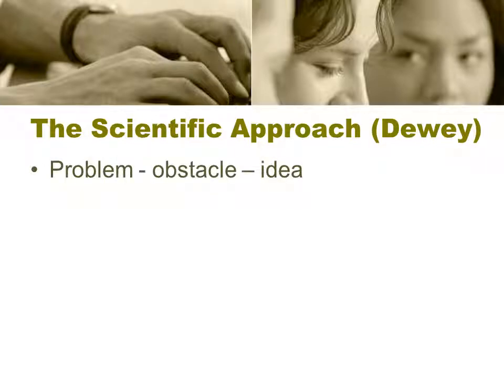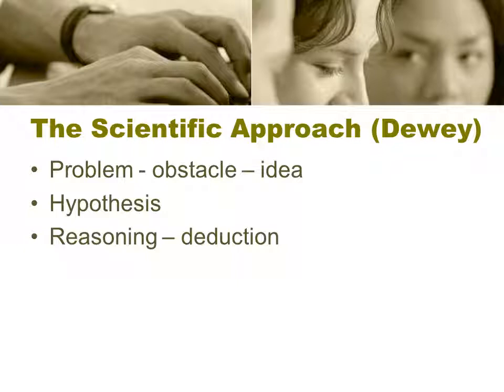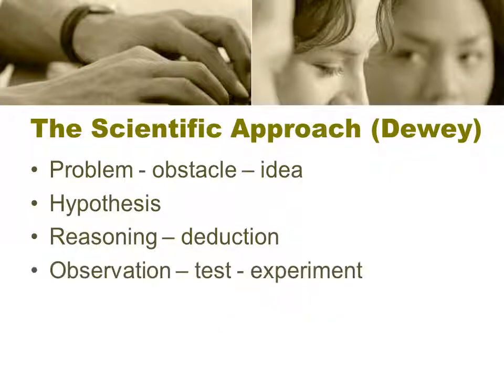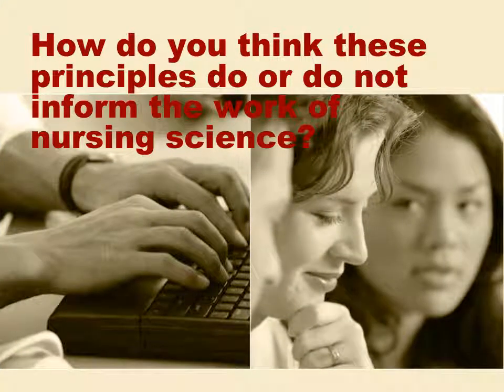Dewey defined the scientific approach as having a problem, an obstacle, or an idea; creating a hypothesis based on a review of the literature and what's known; deductively reasoning; and then testing the experiment. You then come up with your results and a reasonable explanation about whether or not you were able to prove or disprove your hypothesis.